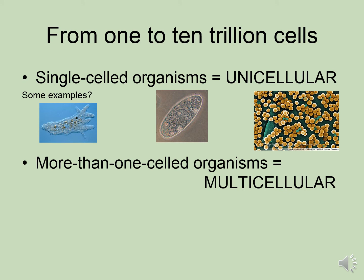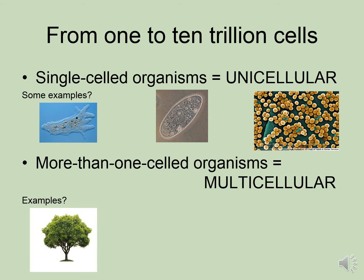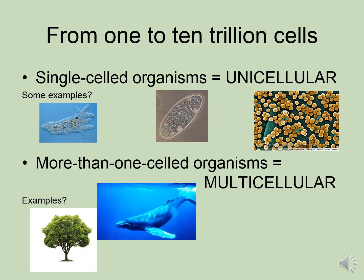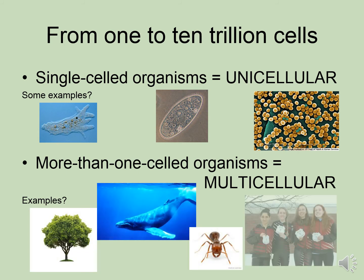But there are other organisms that have developed groups of cells working together in order to more efficiently carry out life processes. We call these more than one-celled organisms multicellular — things like trees, blue whales, ants, and high school students. These are all multicellular organisms.